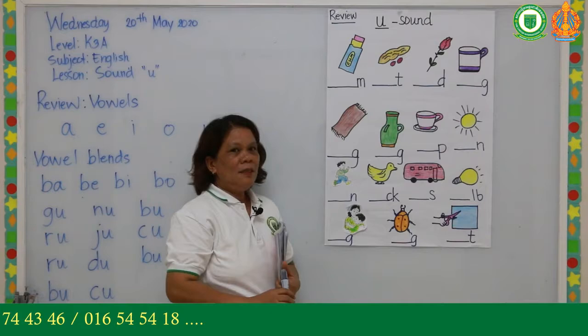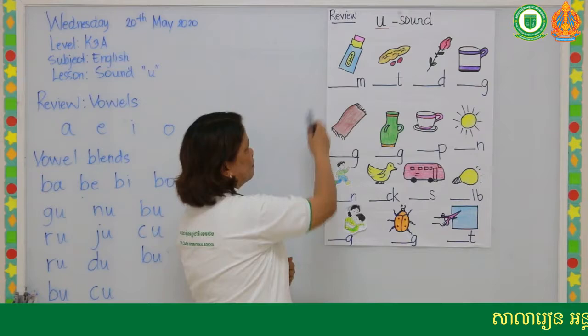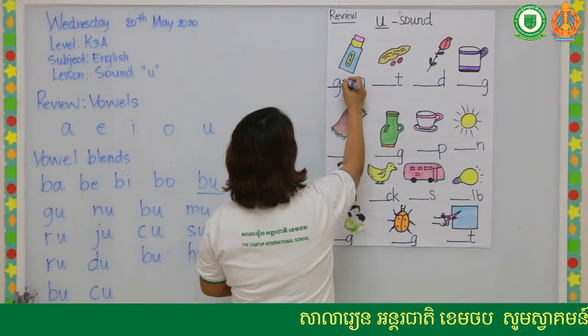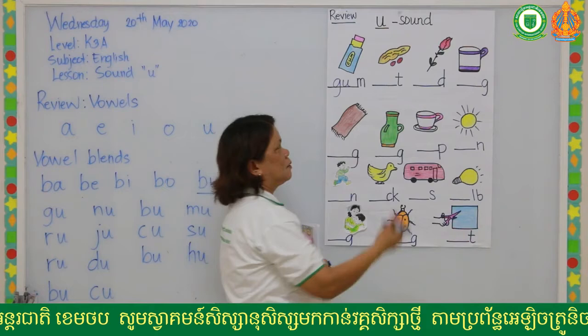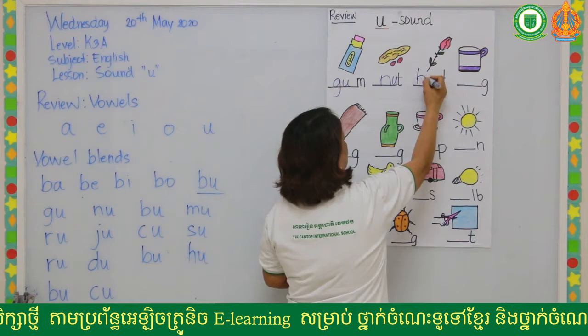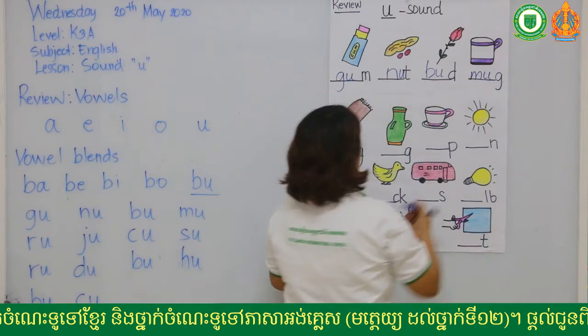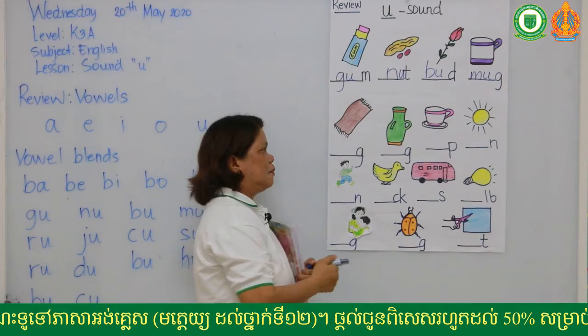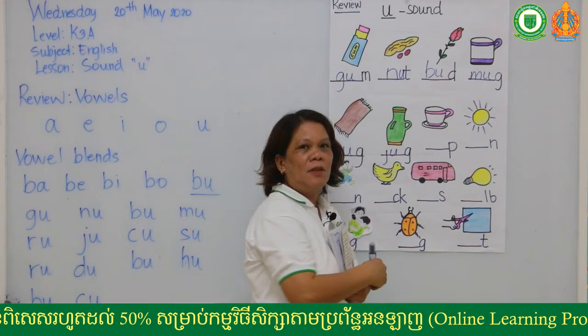Okay, if I read the pictures again, you're going to tell me the vowel blends. Like number one: gum — the vowel blend of gum is 'gu,' letter G and U. About number two: this is knot — the vowel blend of knot is 'no.' About number three: bud — the vowel blend of bud is 'bu.' If I say mug, the vowel blend of mug is 'mu.' And here rug — it is 'ru.' This is a jug — it is 'ju.' And here is cup.